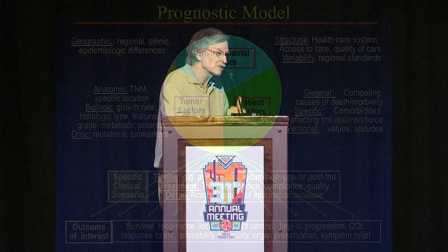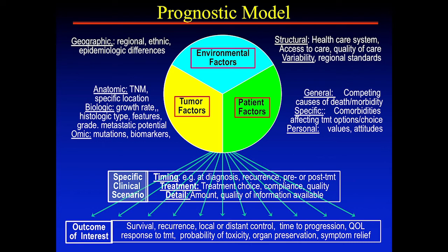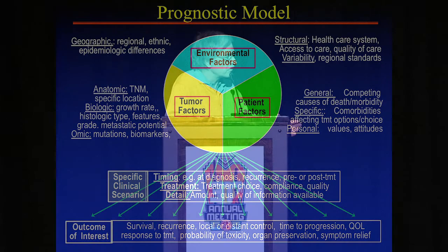There are environmental factors, tumor factors, and patient-related factors affecting prognosis — including the region you're in and the healthcare system. Anatomic extent of disease is a major factor, but genetic mutations have an impact, and there are many other factors. Patient-related factors matter too: a patient who's 50 years old has a different outlook than one who's 85, and comorbidities play a role.